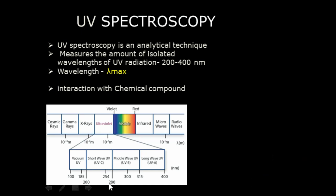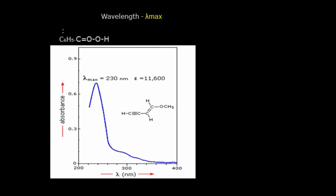Here, 200 to 400 nanometer range is the UV range. In this range, electronic transitions occur. This is the derivative of 1,3-butadiene. The lambda max value is absorbed at 230 nanometer. In the y-axis, absorption is measured. In the x-axis, lambda max is denoted. When the electrons jump from the lower state to the excited state, that molecule absorbs the UV region from 200 to 400 nanometer and replicates the peak — that means the lambda max peak.